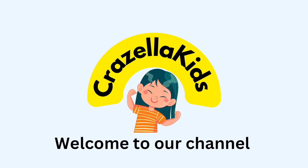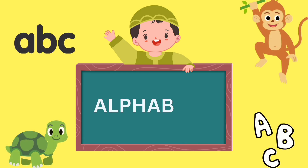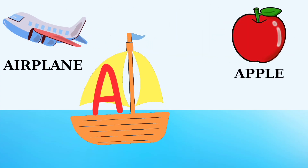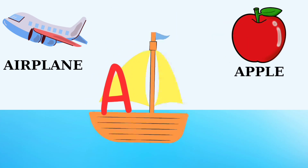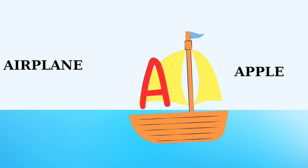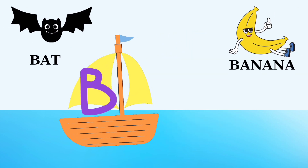Welcome to our channel. Let's see alphabets. A is for airplane, A is for apple, B is for bat.